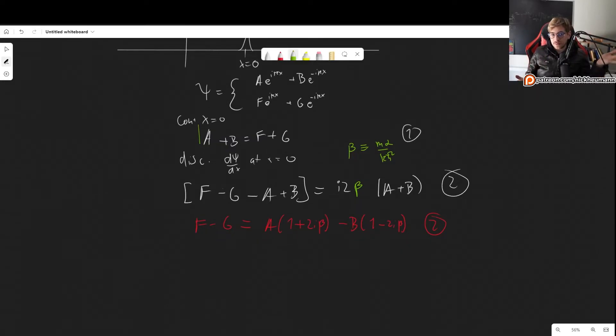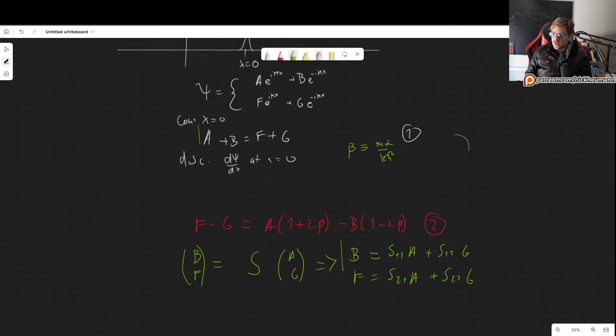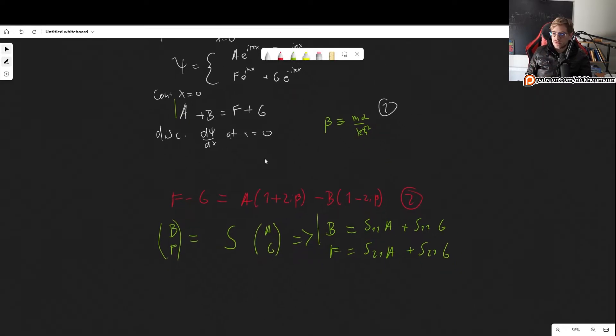But if you don't know that, you can perfectly well just define this with a 2 inside, and eventually you will notice that there's a lot of 2s everywhere, and you can redefine your β accordingly later. It doesn't matter. We can do it a bit better now with the hindsight that I've already done this, but it doesn't matter if you don't know that. Okay, and this however is not all that clean. Let's put all B's and A's together. So we get F - G equals A times (1 + 2iβ) minus B times (1 - 2iβ). So this is equation 2. So our goal is to find the S matrix so that we can use it to determine the bound states.